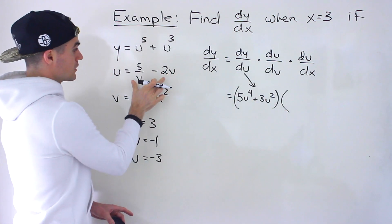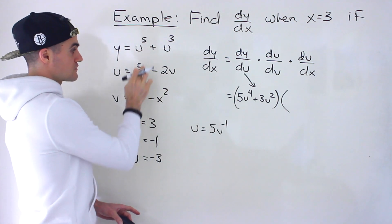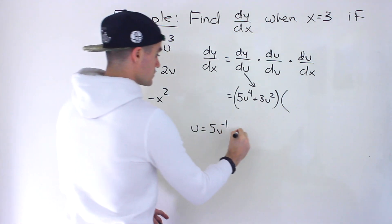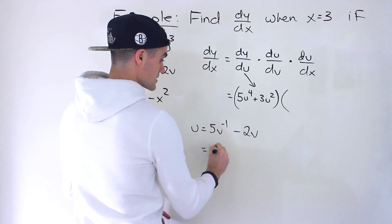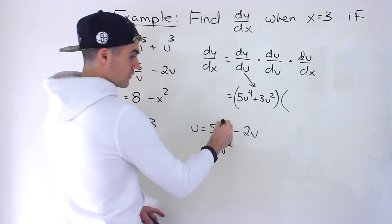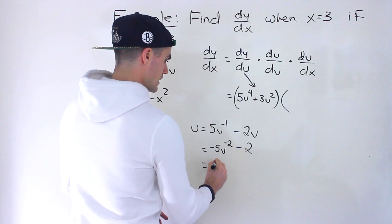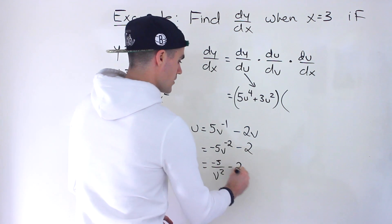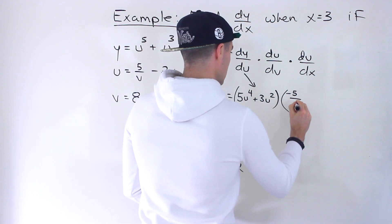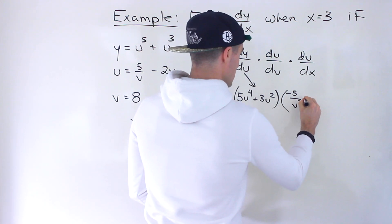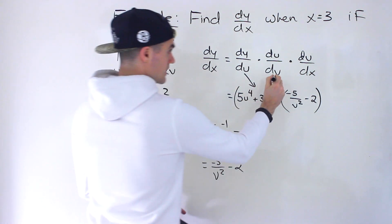For du/dv, we take the derivative of u equals 5 over v minus 2v. Rewrite 5/v as 5v to the negative 1, so we have 5v⁻¹ minus 2v. Bringing the negative 1 down: negative 1 times 5 gives negative 5v to the negative 2, minus the derivative of 2v which is 2. That gives us negative 5 over v squared minus 2. So du/dv equals negative 5 over v squared minus 2.